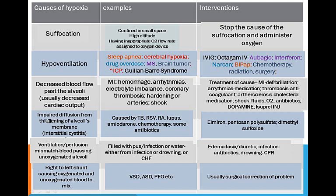A fourth cause of hypoxia is impaired diffusion from thickening of the alveolar membrane, such as interstitial cystitis. Your alveolus is usually about 0.2 nanometers thick. Anything that increases that thickness is going to decrease the diffusion or transport of oxygen. Some things that can cause this include tuberculosis, RSV, rheumatoid arthritis, lupus, chemotherapy, some antibiotics, and amiodarone. Interventions include elmiron, pentosan polysulfate, and dimethyl sulfoxide.